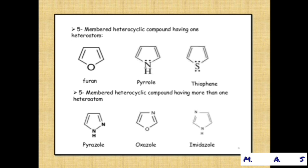Five-membered heterocyclic compounds having more than one heteroatom — in these rings, more than one heteroatom is present, such as oxygen, nitrogen, or sulfur. Examples: pyrazole, where numbering starts from NH at position 1 and N at position 2; oxazole, containing oxygen and nitrogen; and imidazole, which also contains nitrogen and NH.